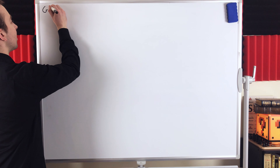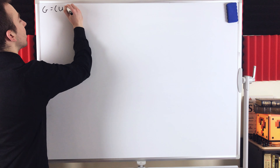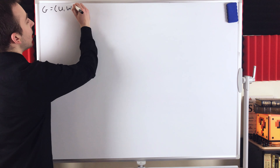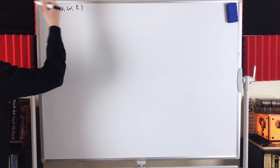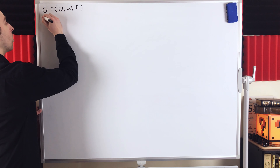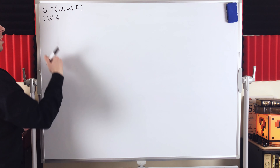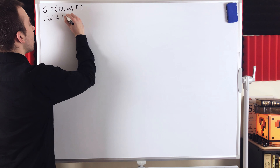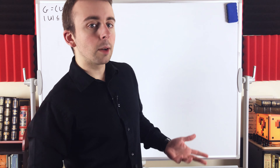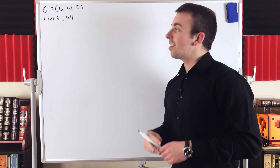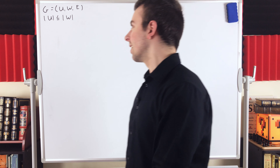Let's say we've got our bipartite graph G with partite sets U and W and edge set E. We're going to say that U is the smaller partite set, so the cardinality of U is less than or equal to the cardinality of W. It's possible that U and W have the same number of vertices, in which case either one could play the role of the smaller partite set.